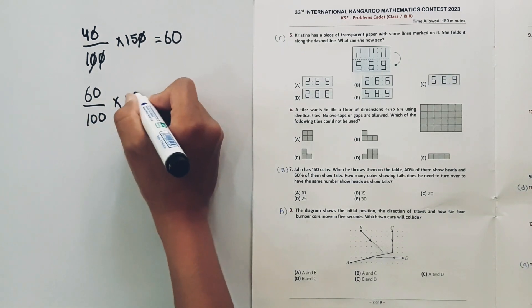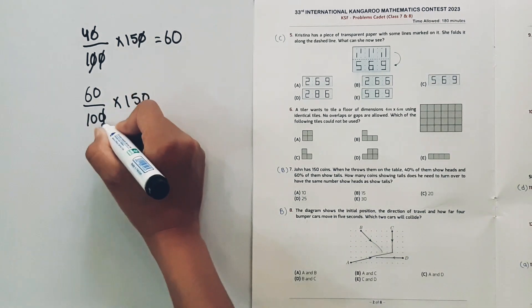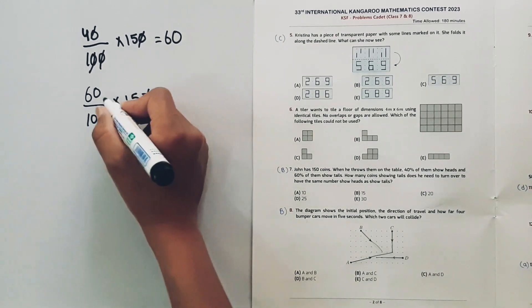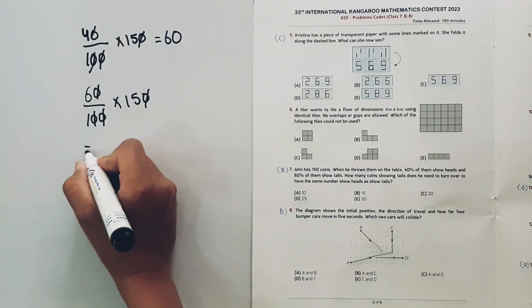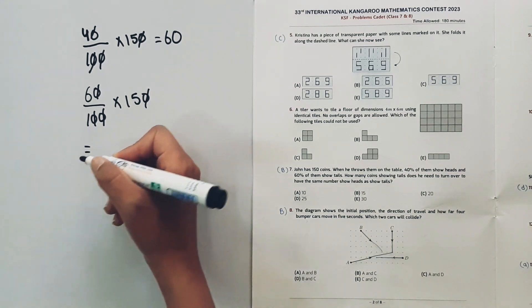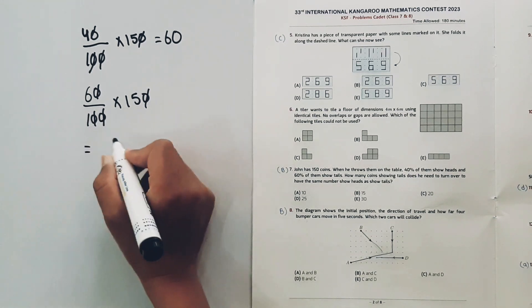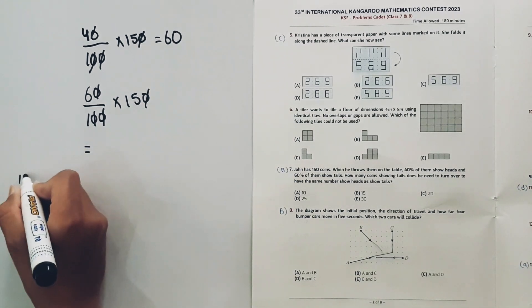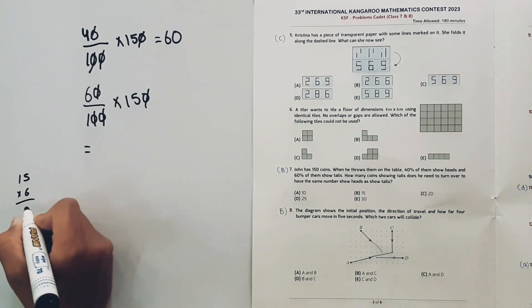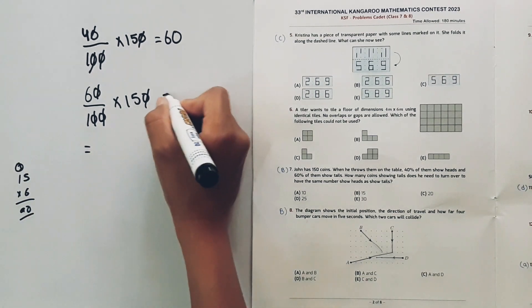And 60% of 150 is equal to... we will calculate this... 15 times 6... equals 90.